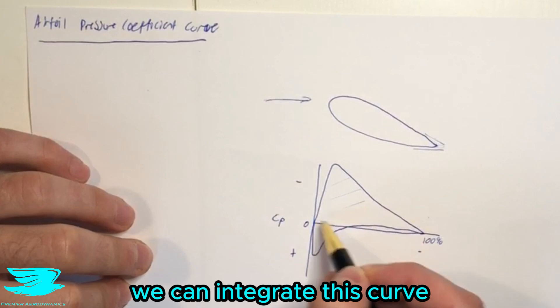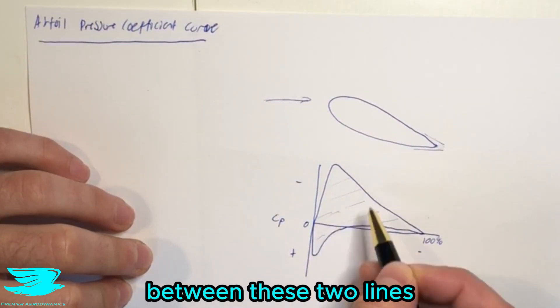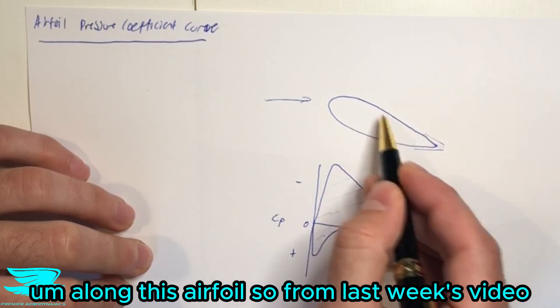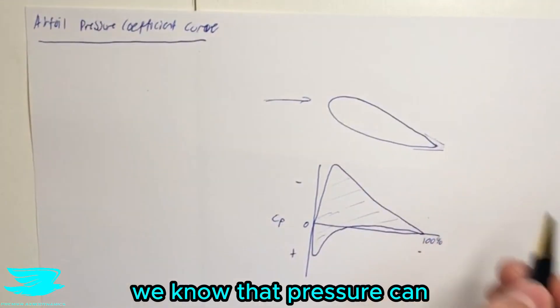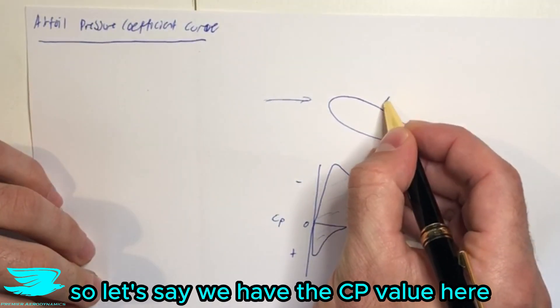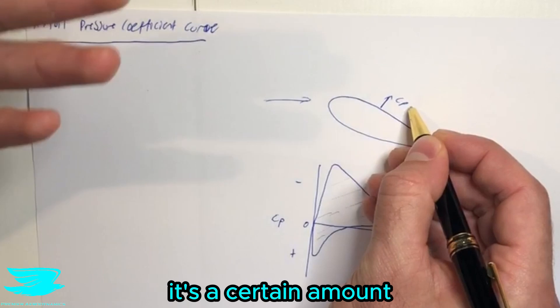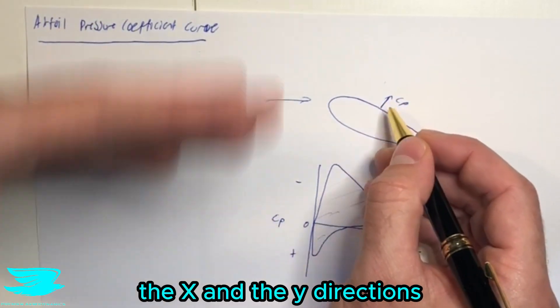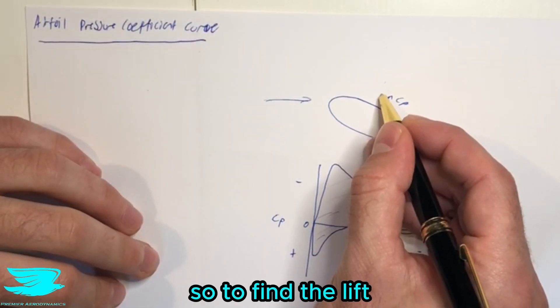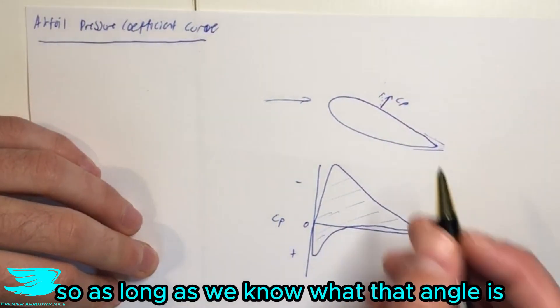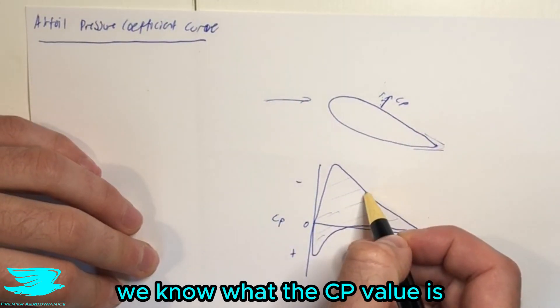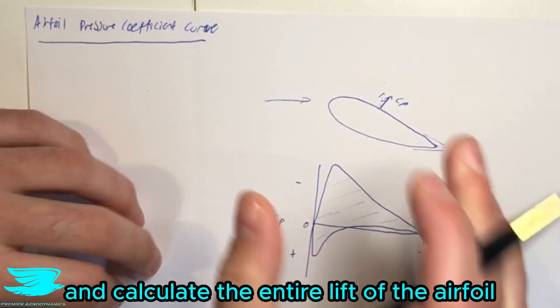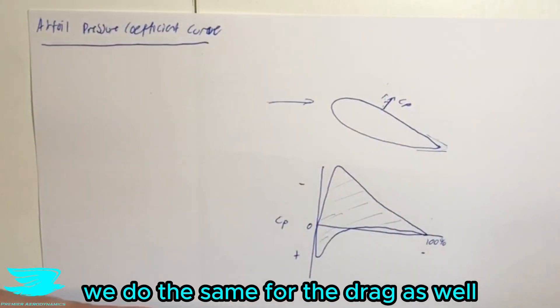So what we do is we can integrate this curve between these two lines and we can figure out the lift as long as we know what the angle of these surfaces are along this airfoil. So from last week's video, we know that pressure can only act normal to a surface. So let's say we have the CP value here is a certain amount. Well, that obviously isn't just in the lift direction. It's also in the drag direction a little bit, the X and the Y directions. So to find the lift, we need to decompose it into the lift direction, which is this direction here. So as long as we know what that angle is, we know what the CP value is, so we can then calculate the lift at that point. And we can go around this airfoil as such and calculate the entire lift of that airfoil. We do the same for the drag as well.